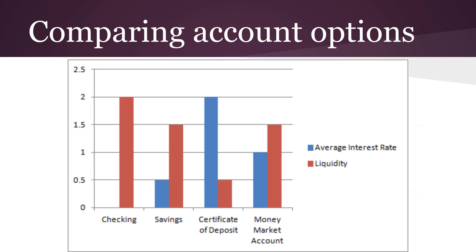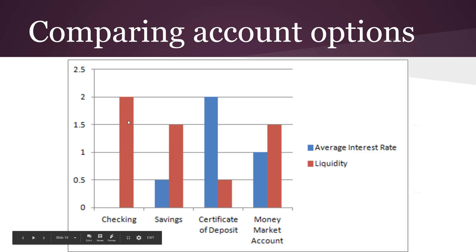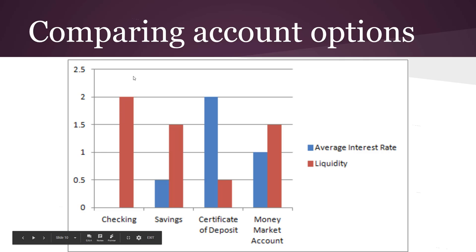Now once you have proof that you can get one, it is your turn to start judging the banks. When you are comparing different account options, here are two key things you want to look for: the interest rate on those accounts and the liquidity. What matters here is what you need this account to do for you. For example, your checking account has no average interest rate, which doesn't seem like a good thing, but it's so liquid — so easy to use your money — that might be what you're looking for. So depending on what you are looking for, your account needs will be different.